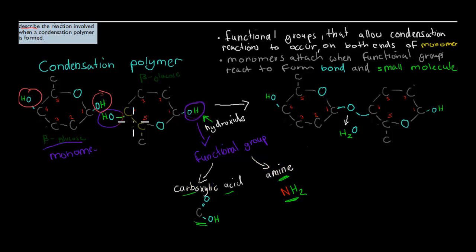You have to have them on either end, and what happens then is they join together, and you have the bond being right there, and you have the loss of a water molecule. So functional groups that allow condensation reactions to occur on both ends of the monomer. The monomer is attached when functional groups react, so when these two react together, and you have the bond being formed plus a water molecule being lost.